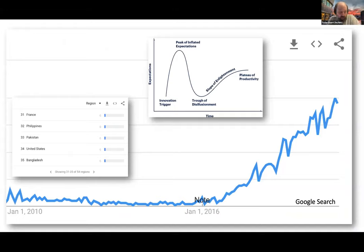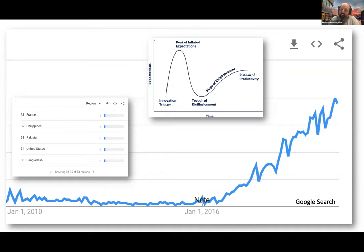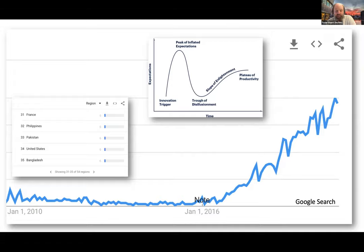If we look at trends, the Google search trend for digital twins shows that the United States is not yet high on the list, but in Europe it's becoming quite trendy. This gives an expectation that the curve will reach a peak of inflated expectations and then a trough of disillusionment. Up to now we have had an innovation trigger and are now moving toward that peak.